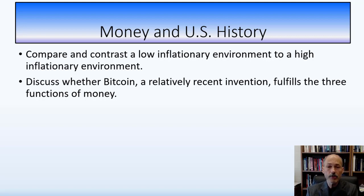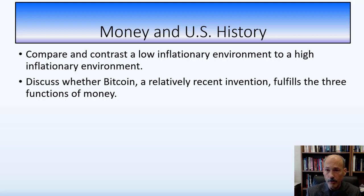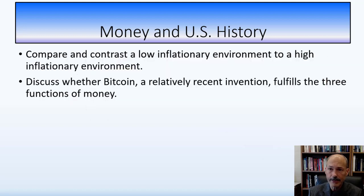We'll compare and contrast a low inflationary environment to a high inflationary environment using these functions of money. Then we'll discuss whether Bitcoin, a relatively recent invention, fulfills the three functions of money. And we'll look at the money supply — M1 and M2 — using actual numbers, information, and graphs from FRED, the Federal Reserve Economic Database.